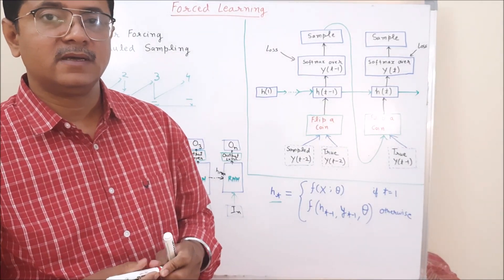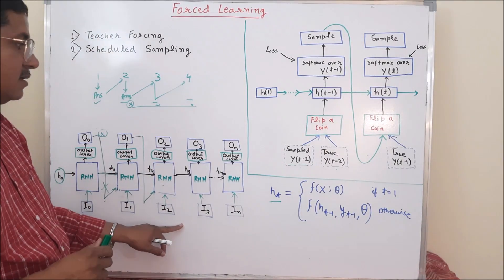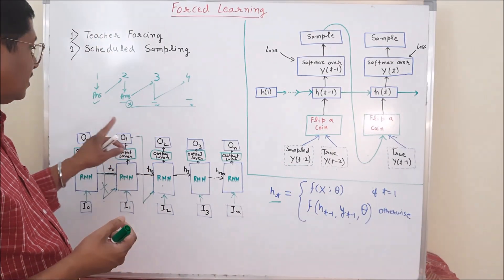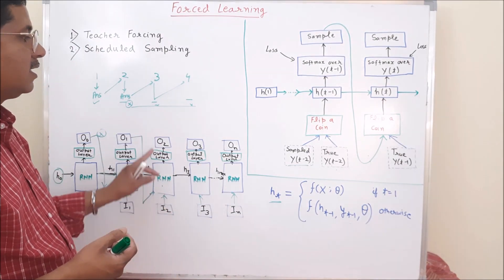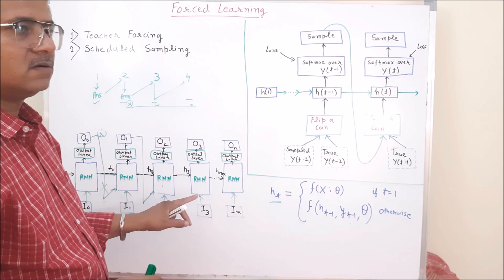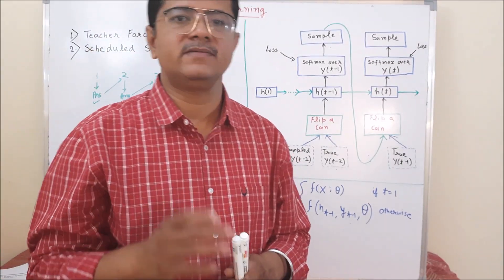But, what happens with this teacher forcing? The positive thing is that I already discussed. Like it will take less time, better quality output. Your output will be near to the ground truth. And it will take less time. Means convergence will be faster.